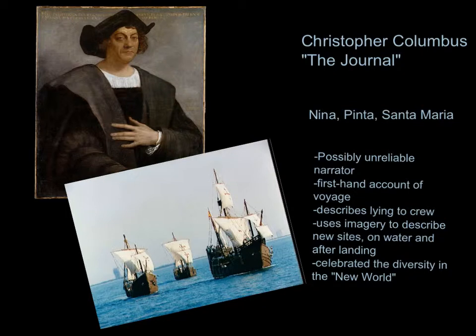The next piece we read is from Christopher Columbus, and it's from his journal, which was kept as he made his way to the New World in the Niña, the Pinta, and the Santa María. We do need to remember that because this is a first-person narration of his account, it's possible that he was an unreliable narrator. We also need to remember that he actually describes lying to his crew, primarily to prevent mutiny as they made their way across the seas. He uses a lot of imagery to describe the sights on water and on land after landing, and at the end we're going to see that he celebrated the diversity that he found in the New World.